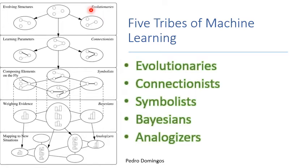For example, it's very common now to first use the evolutionary approach to learn the architecture of a neural network — to decide which neurons to select — and then use the connectionist approach to learn the parameters of each connection. Then we can apply a new approach called distillation to try to find the rules behind the neural network, combining the symbolist approach.